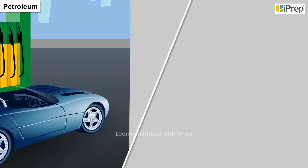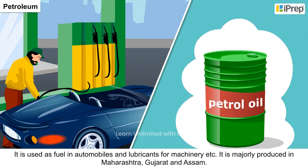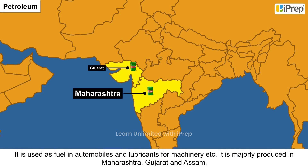Petroleum. It is used as fuel in automobiles and as lubricants for machinery. It is majorly produced in Maharashtra, Gujarat, and Assam.